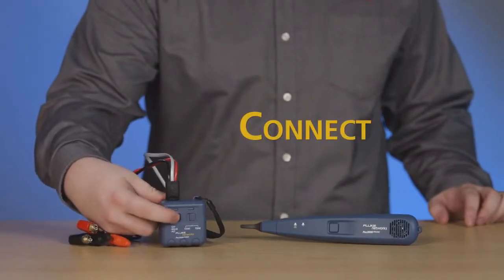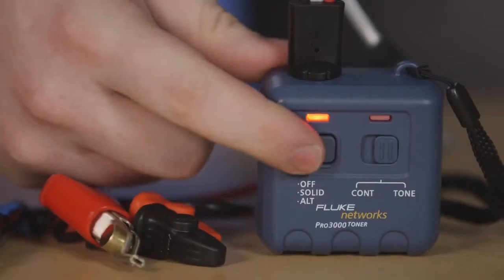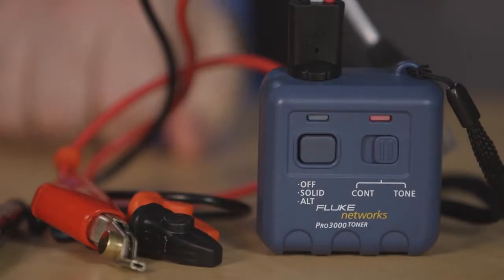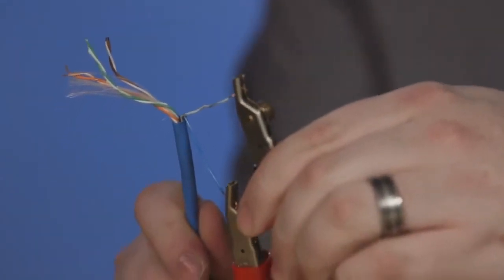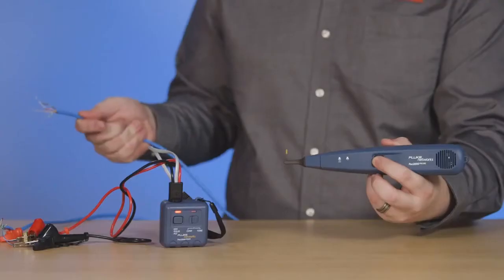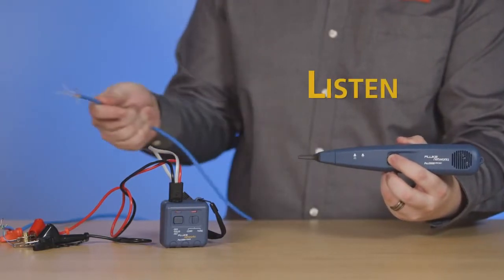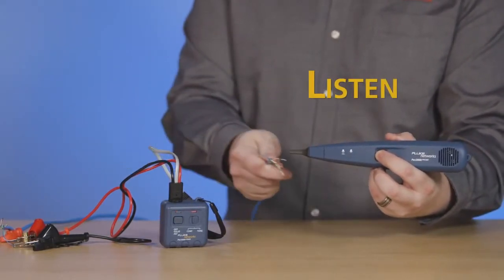First, turn on the Pro 3000 tone generator and press the button until the red light on the left is blinking. Then connect it to the cable you want to trace. Using the Pro 3000 probe at the opposite end of the cable, listen to the distinct tone.